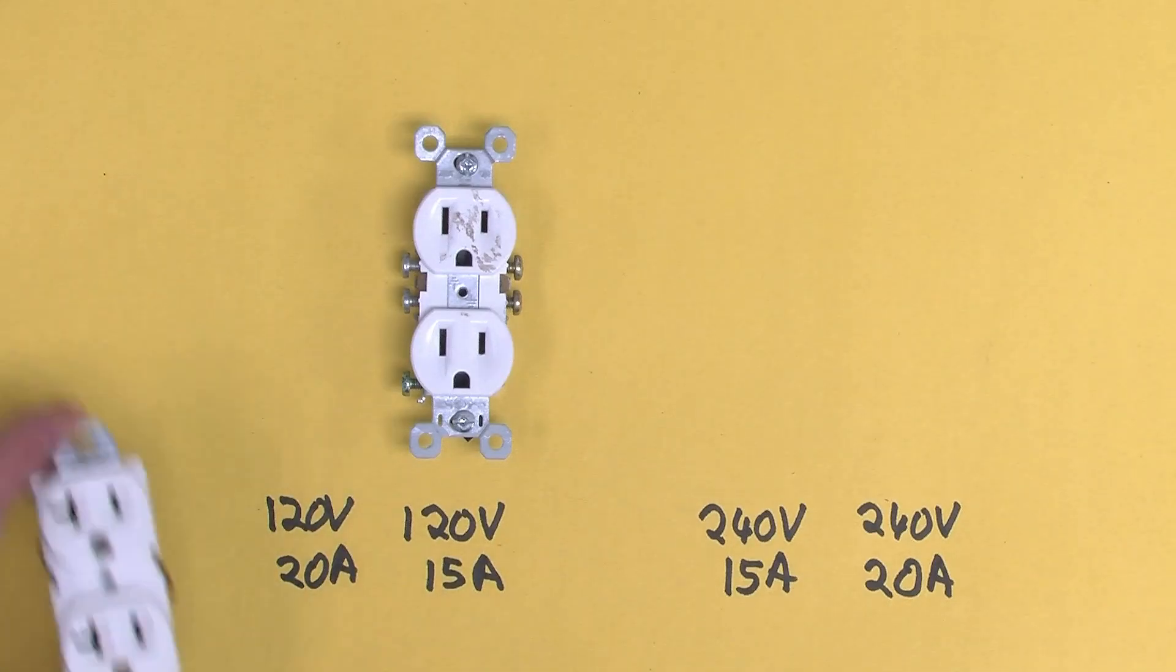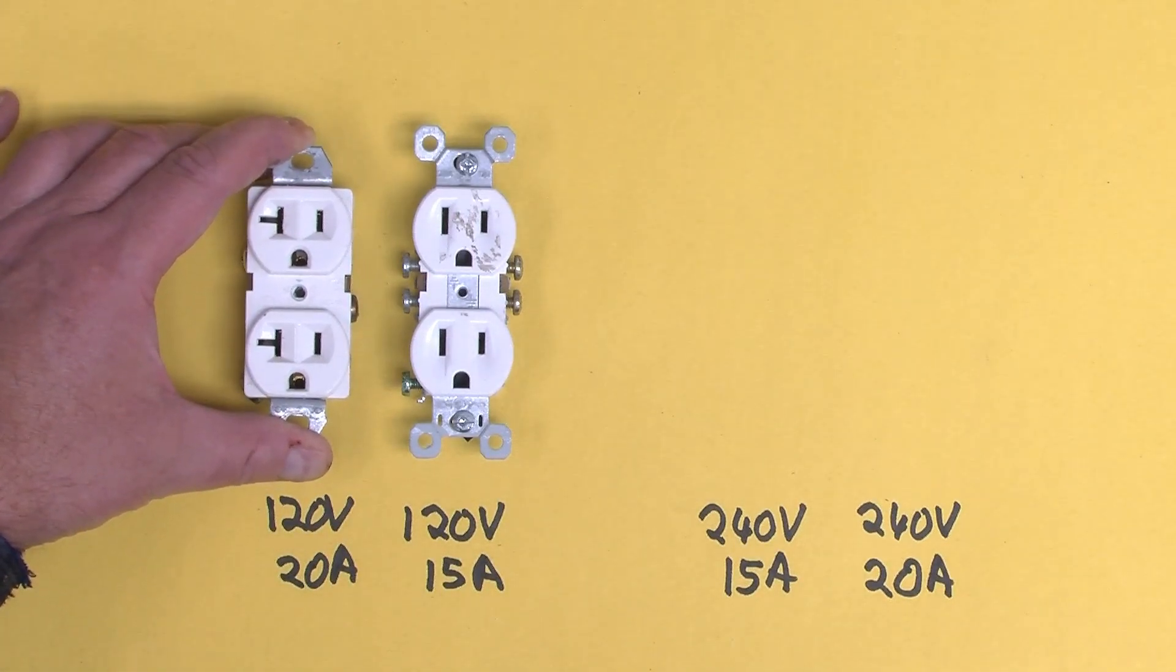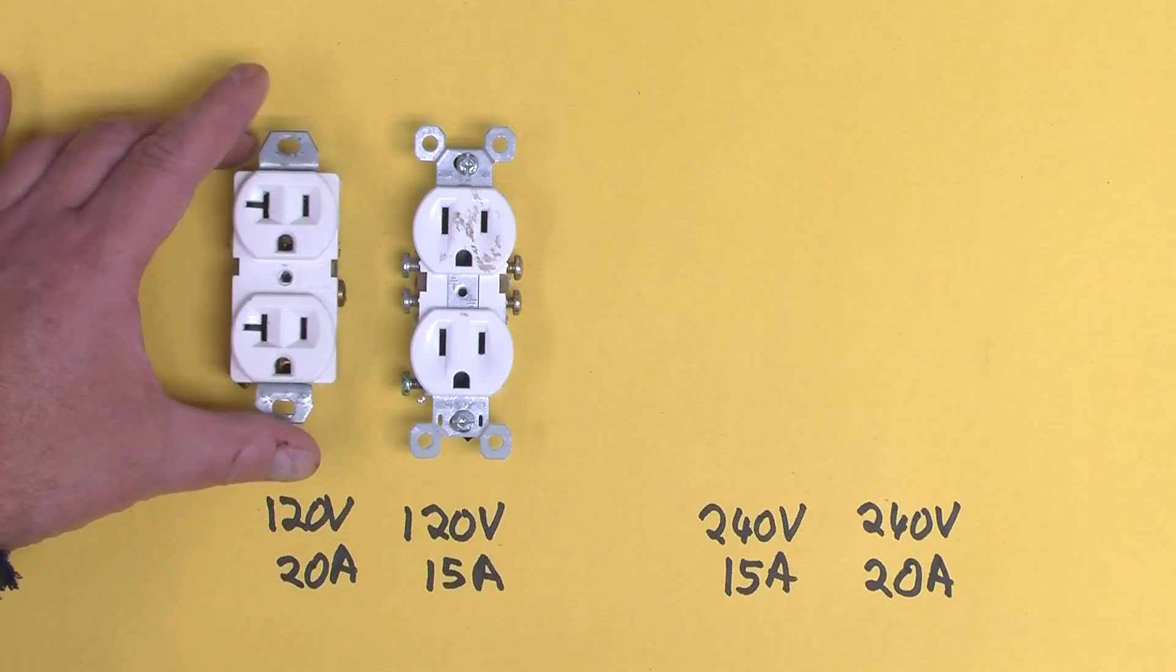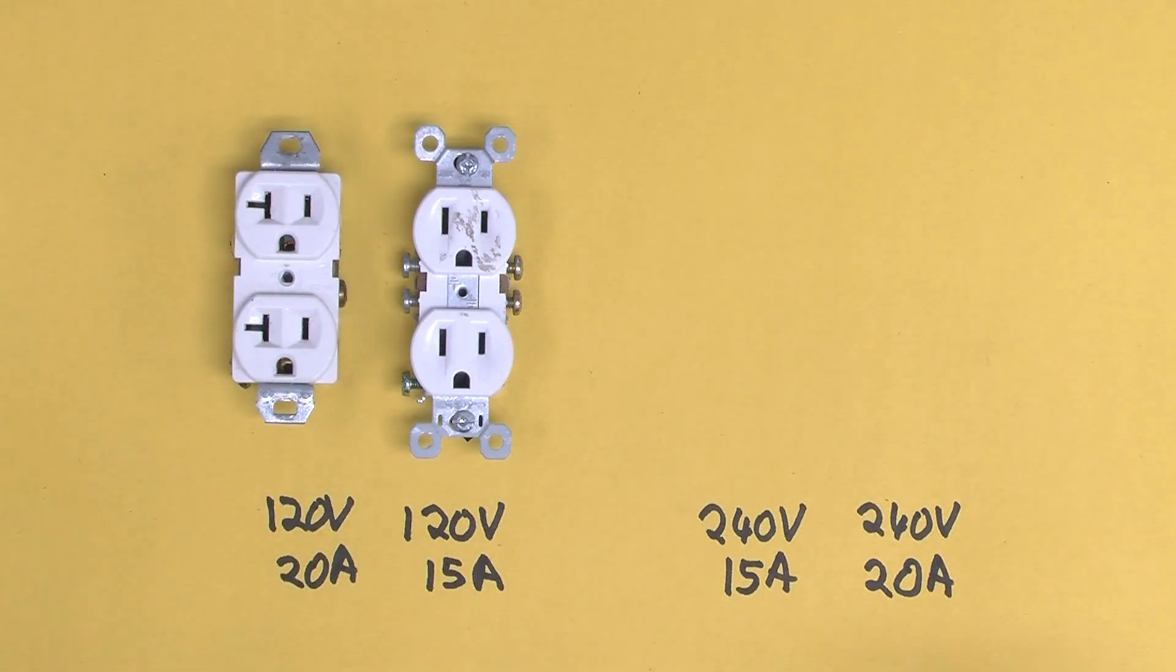Perhaps the next most common one is this one, which is the 20 amp version of the same thing. They used to be quite uncommon, but now they're getting more common because people are using them in kitchens.